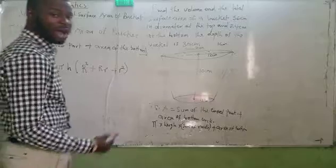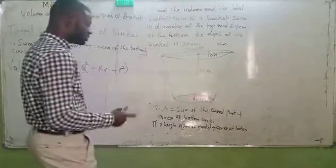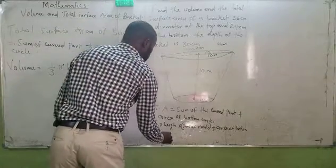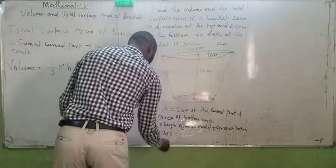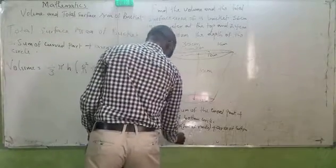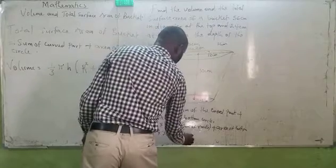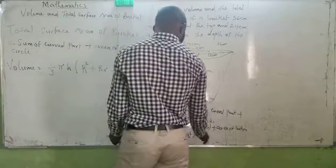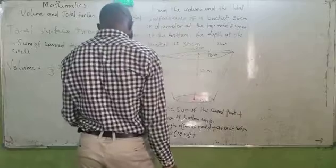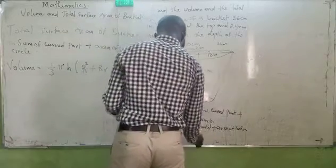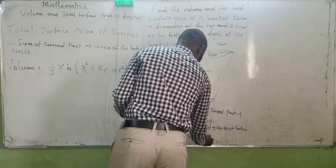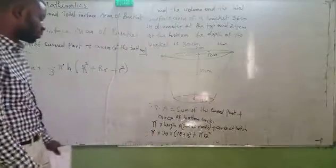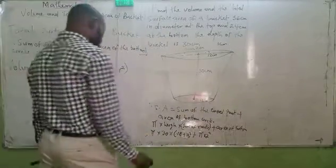It means I am talking about pi multiplied by height multiplied by sum of radii. Plus area of the bottom. When we have more than one radius, we call it radii, which is R-A-D-I-I. I think I will be having pi multiplied by 30 multiplied by radii will now be 18 plus 12 plus area of the bottom. Area of the bottom would be pi R squared. R squared would be pi 12 squared. Area of the bottom is area of the circle, which is 12 squared.